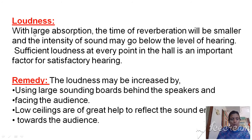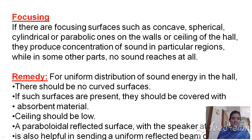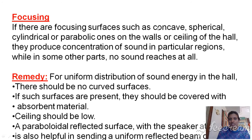The next factor which affects the acoustics of buildings is focusing. If the entire sound focuses on a single place, there is loss of clarity. This happens due to curved shapes of surfaces — either concave, spherical, cylindrical, or parabolic surfaces on the walls or ceiling of a hall. They produce concentration of sound in a particular region, while in some other parts no sound reaches at all.